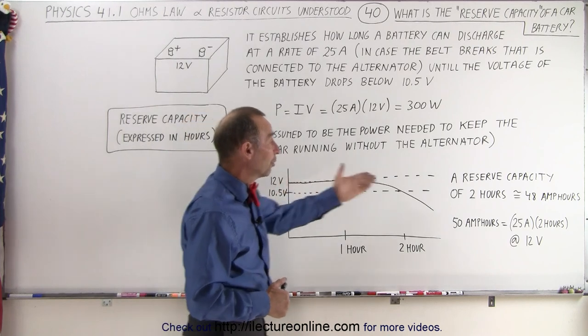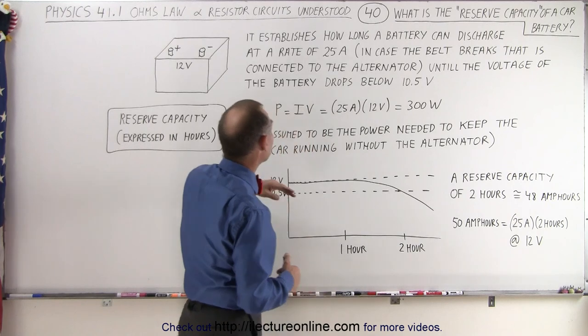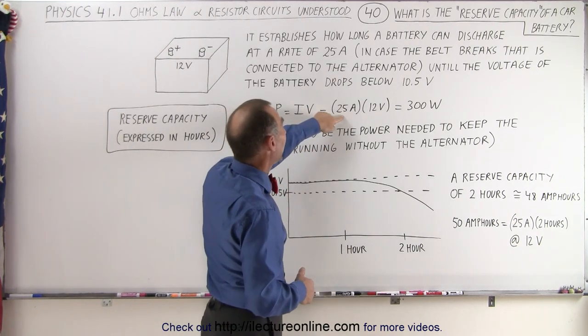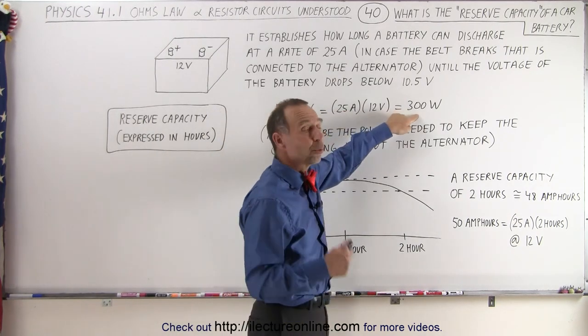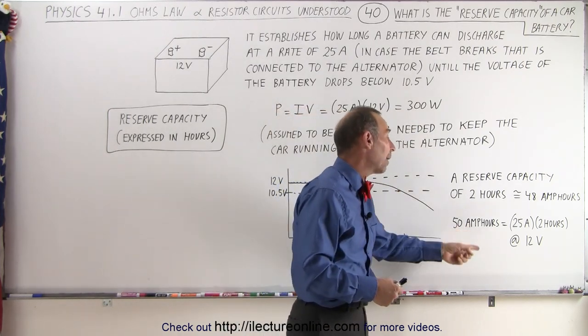But the reserve capacity can also be expressed in terms of amp hours. Typically, if you have 25 amps at 12 volts, which is a 300-watt power output for a total of two hours, that would be equal to 50 amp hours.